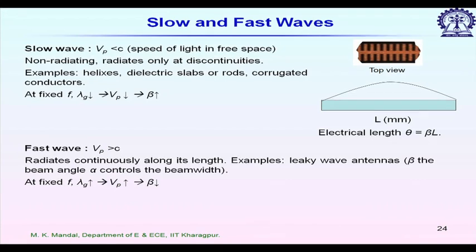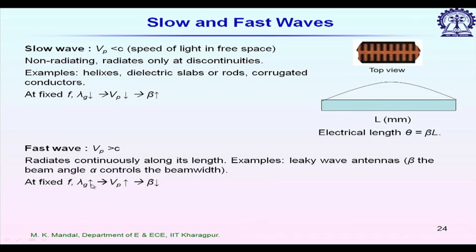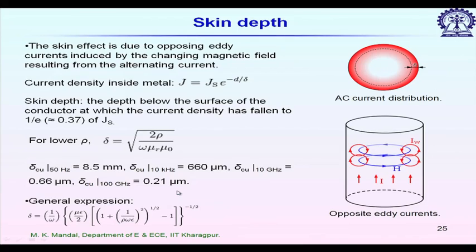Fast wave has another application: we can design antennas using this continuous radiation along the length. This category is called the leaky wave antenna. For a leaky wave antenna, the beam direction is a function of beta or frequency — so if I change the frequency the beam direction will change, enabling continuous beam scanning by frequency sweep. The attenuation constant alpha determines the beam width. For the fast wave case, lambda g is higher since v_p is higher and beta is lower than k naught.